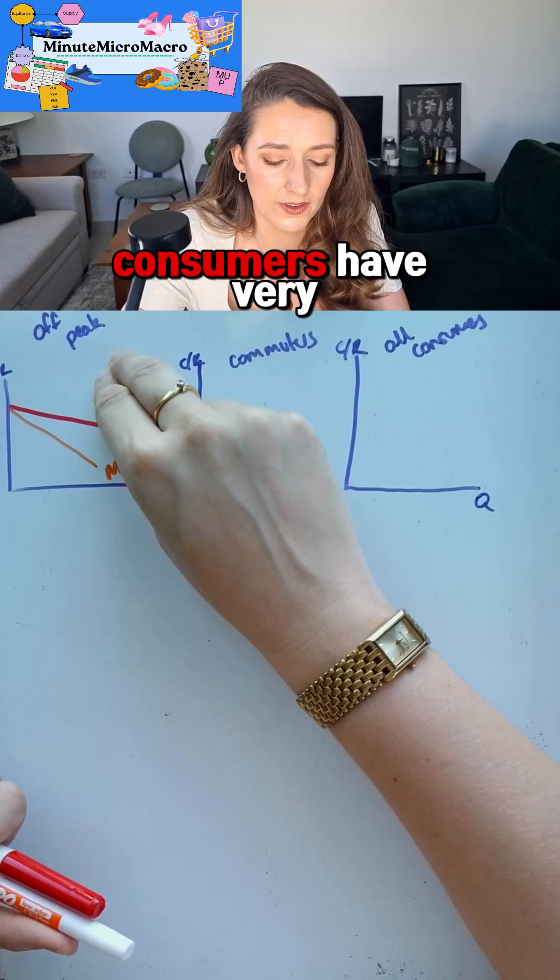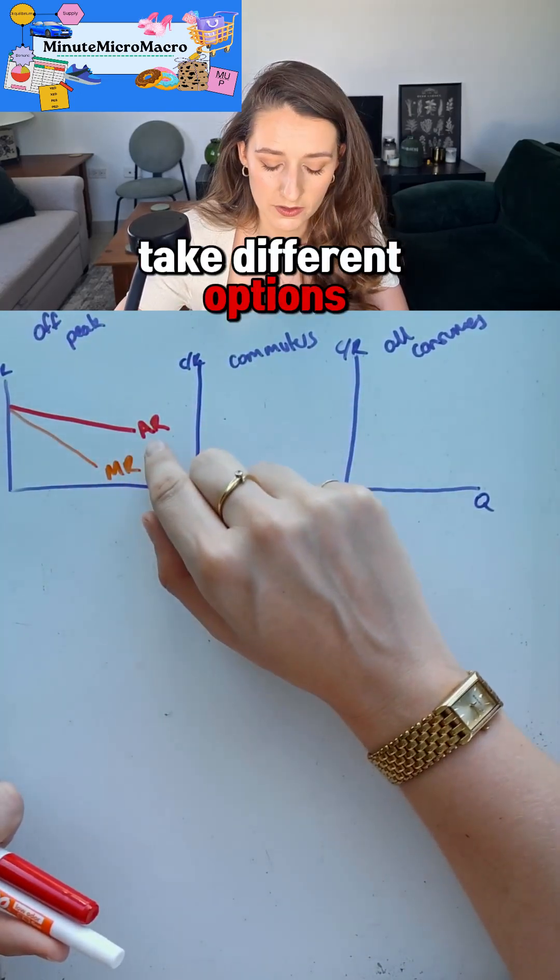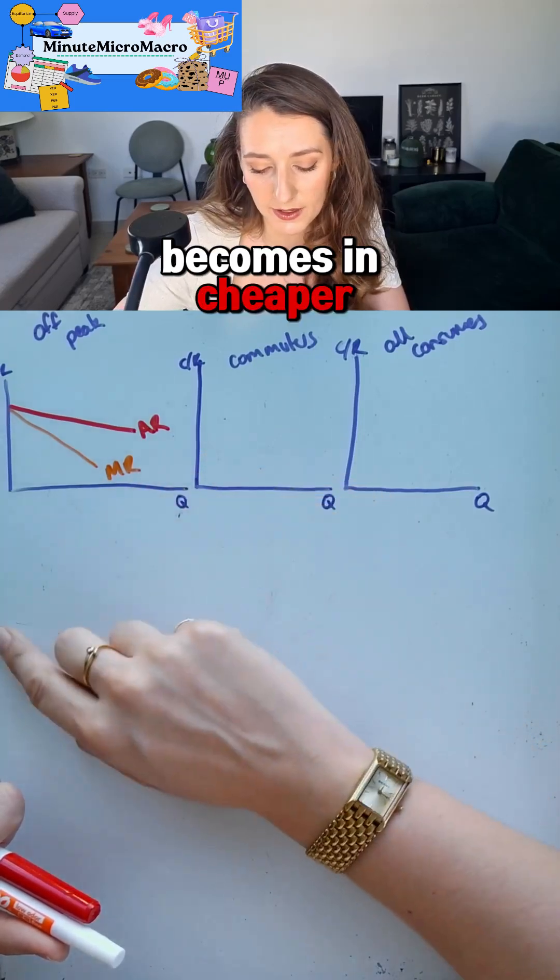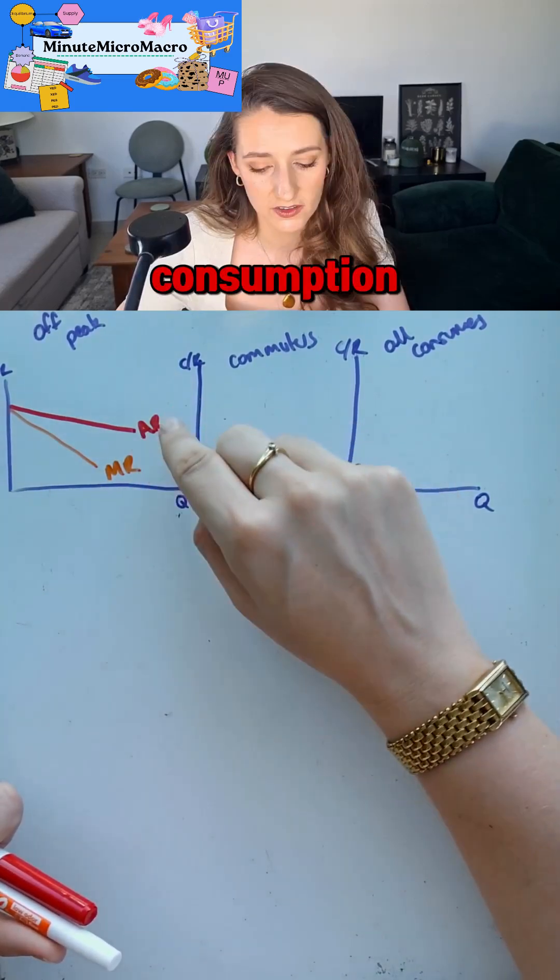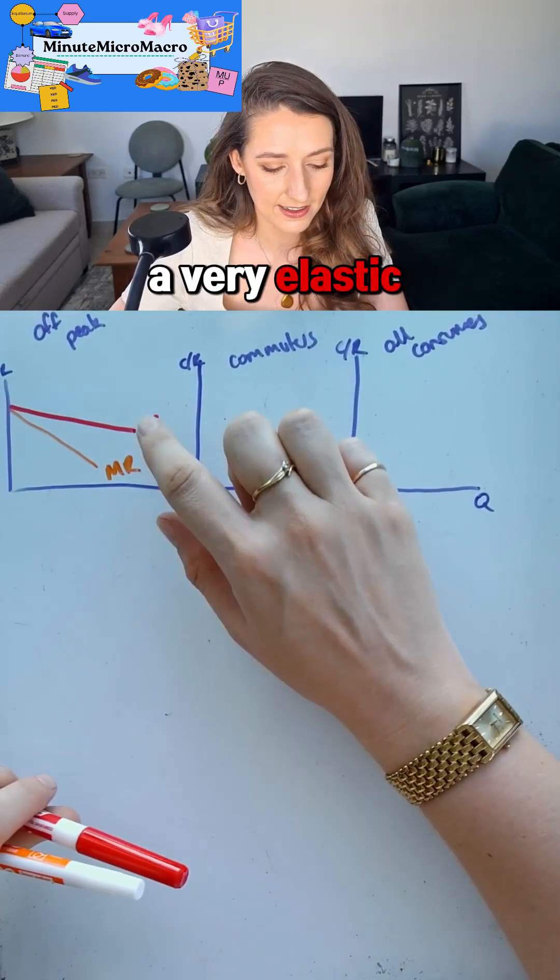I've started us off by showing off-peak consumers have very elastic demand. They have lots of time to take different options. Maybe the bus would be cheaper. If the bus becomes cheaper they might choose to switch their consumption. So they are very responsive to price and they have very elastic demand because of that.